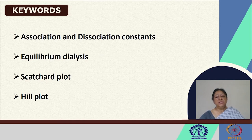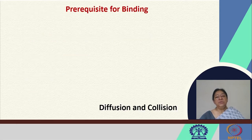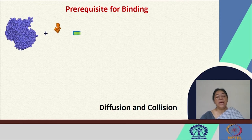The association and dissociation constants are something we looked at in previous classes — methods to identify protein-ligand binding — where we need a methodology to find the protein-ligand binding complex concentration, or the free protein or free ligand left after binding, to get meaningful information about the interaction. The prerequisite for binding, similar to an enzyme-substrate complex formation, requires diffusion and collision.